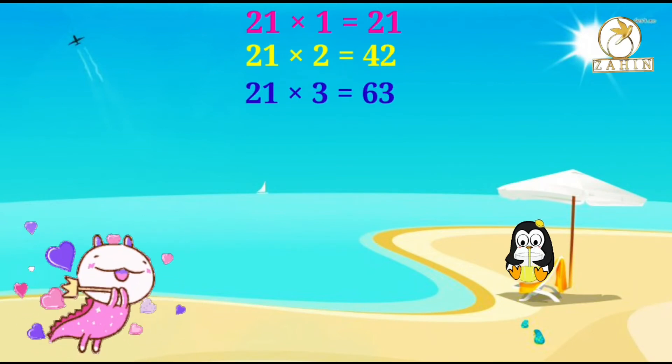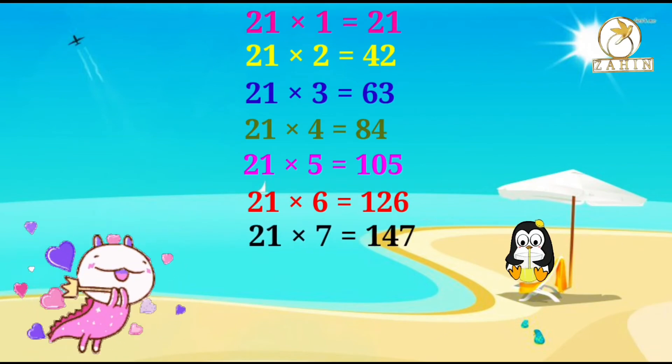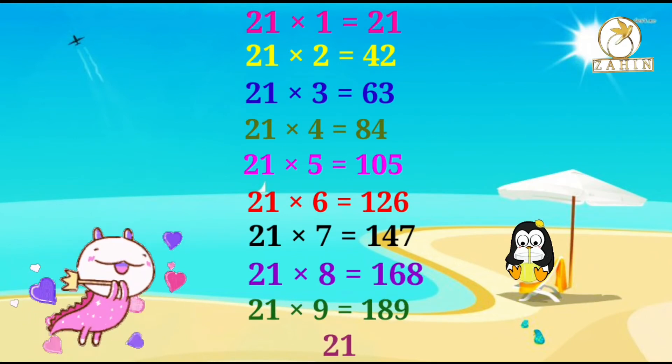21 times 3 equals 63, 21 times 4 equals 84, 21 times 5 equals 105, 21 times 6 equals 126, 21 times 7 equals 147, 21 times 8 equals 168, 21 times 9 equals 189, 21 times 10 equals 210.